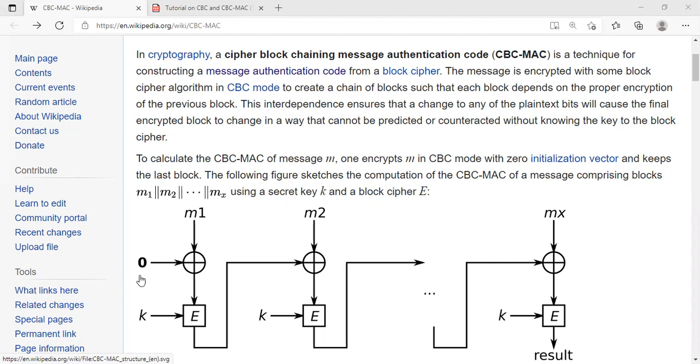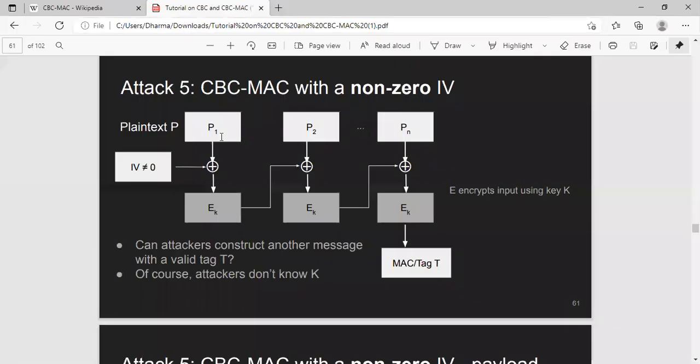If IV is non-zero, what can happen? Why is this a problem? If IV is a non-zero scenario, you can simply swap the first block with your IV. Just take the P1, put it here, put IV here, and you get the same message tag. Because XOR is commutative, right? XOR of A and B is same as XOR of B and A. So you're able to construct a MAC tag for a new message.